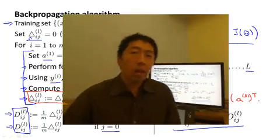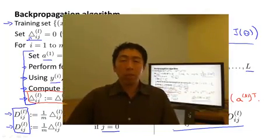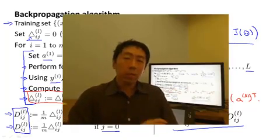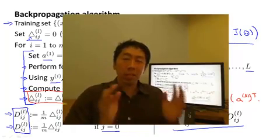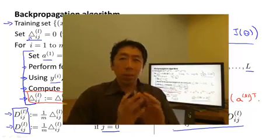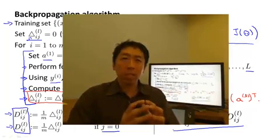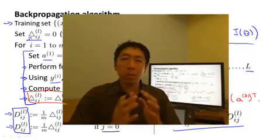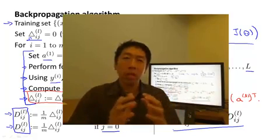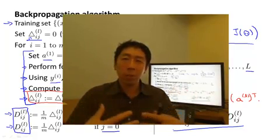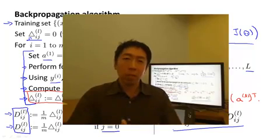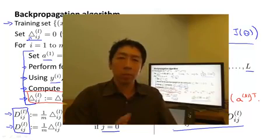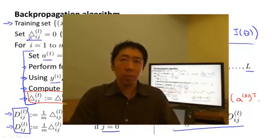So that's the backpropagation algorithm and how you compute derivatives of your cost function for a neural network. I know this looks like a lot of details and a lot of steps strung together. But both in the programming assignments and later in this video, we'll give you a summary so that you have all the pieces of the algorithm together and know exactly what you need to implement to compute the derivatives of your neural network's cost function with respect to its parameters.